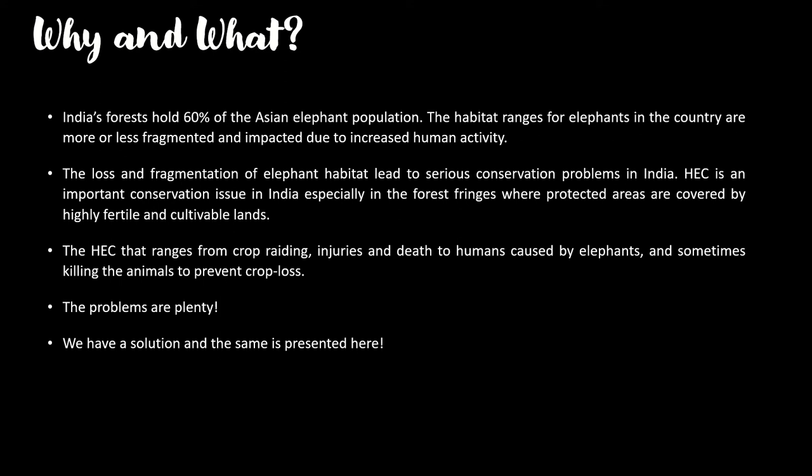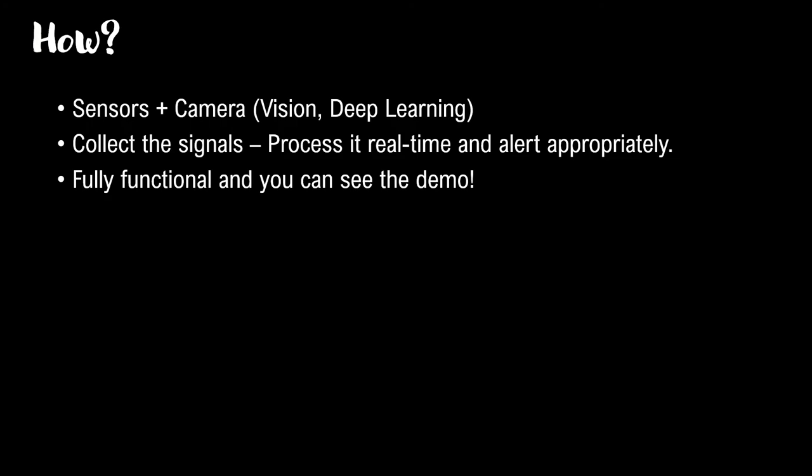We can also avoid crop loss entirely because we can divert the elephant by burning crackers or similar methods. Most existing solutions are incomplete or not fully functional. We need a better solution, and we are here to provide that. We have used seismic sensors and computer vision plus deep learning together — we cannot rely on just one. A combined approach is always better: A and B is always better than A or B. Here, A is sensors and B is camera.